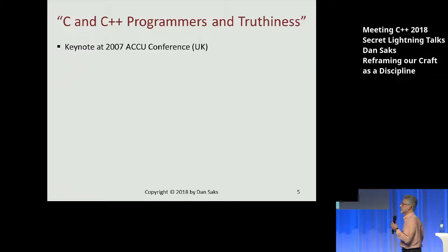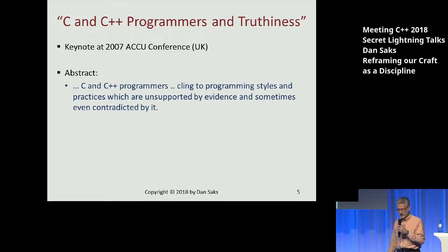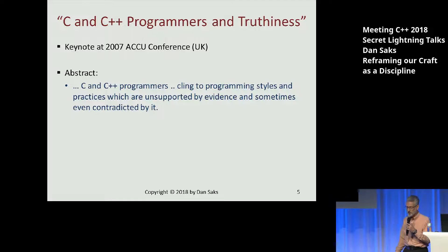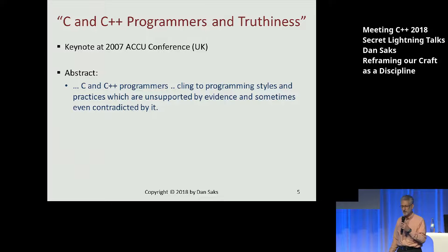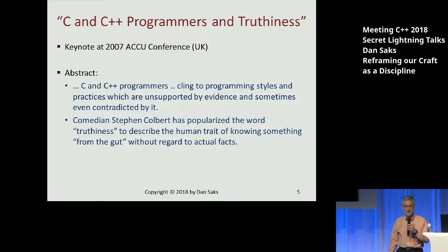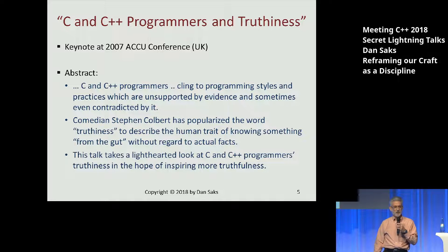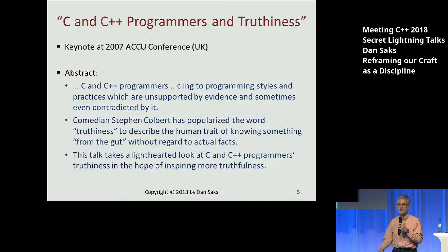Previously I took a stab at this, about 10 years ago. I gave a keynote at the ACCU conference entitled 'C and C++ Programmers and Truthiness,' and you can still find the abstract posted online. It said: C and C++ programmers cling to programming styles and practices that are unsupported by evidence and sometimes even contradicted by it. There's a comedian in the United States, Stephen Colbert, who popularized the word 'truthiness' to describe the human trait of knowing something from the gut without regard to actual facts. What I tried to do was take a lighthearted look at C and C++ programmers' truthiness in the hope of inspiring a little bit more truthfulness.